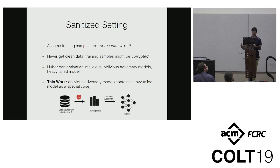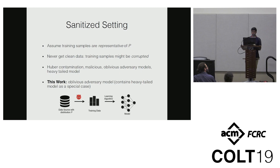Let me briefly discuss what is known about this problem. One class of estimators is based on hard thresholding techniques. While these estimators are consistent — meaning as n goes to infinity they can exactly recover w* — they tend to have a suboptimal breakdown point and can only tolerate a small fraction of corruptions. Another class of estimators based on convex relaxations can tolerate a large fraction of corruptions, even up to 99% response variable corruptions, but some of these are not consistent or are computationally expensive, lacking linear dependence on the number of samples.